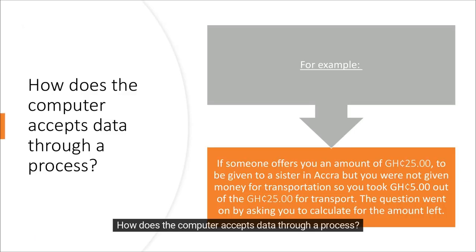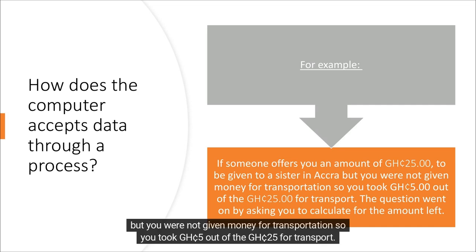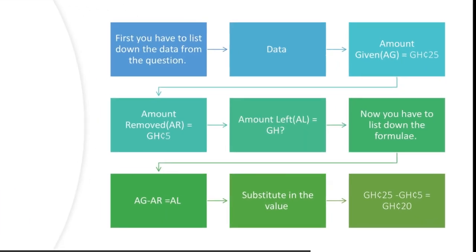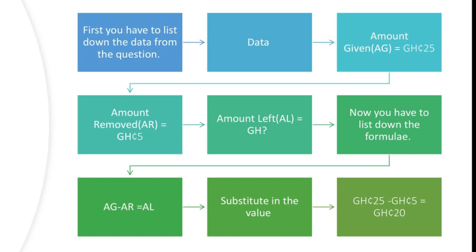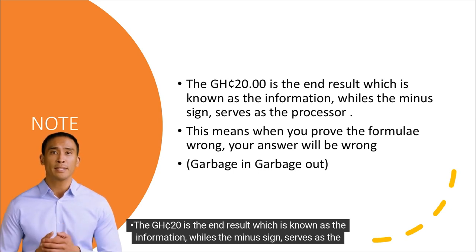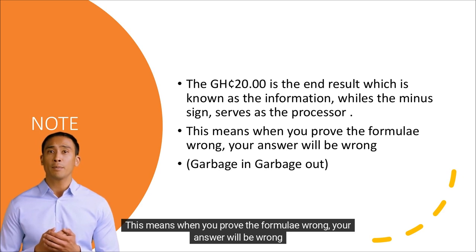How does the computer accept data through a process? For example, if someone offers you an amount of GH₵5 to be given to a sister in Accra, but you were not given money for transportation, so you took GH₵5 out of the GH₵5 for transport. The question asks you to calculate the remaining amount. The end result is known as the information, while the minus sign serves as the processor. This means when you apply the formula wrongly, your answer will be wrong.